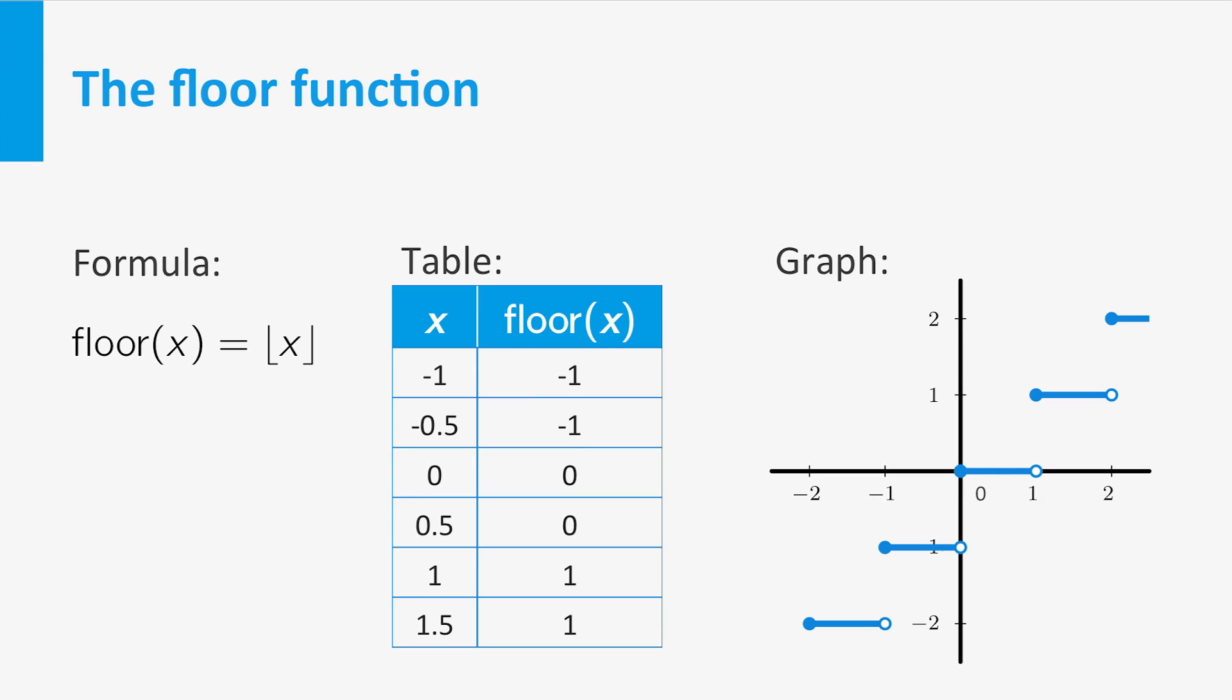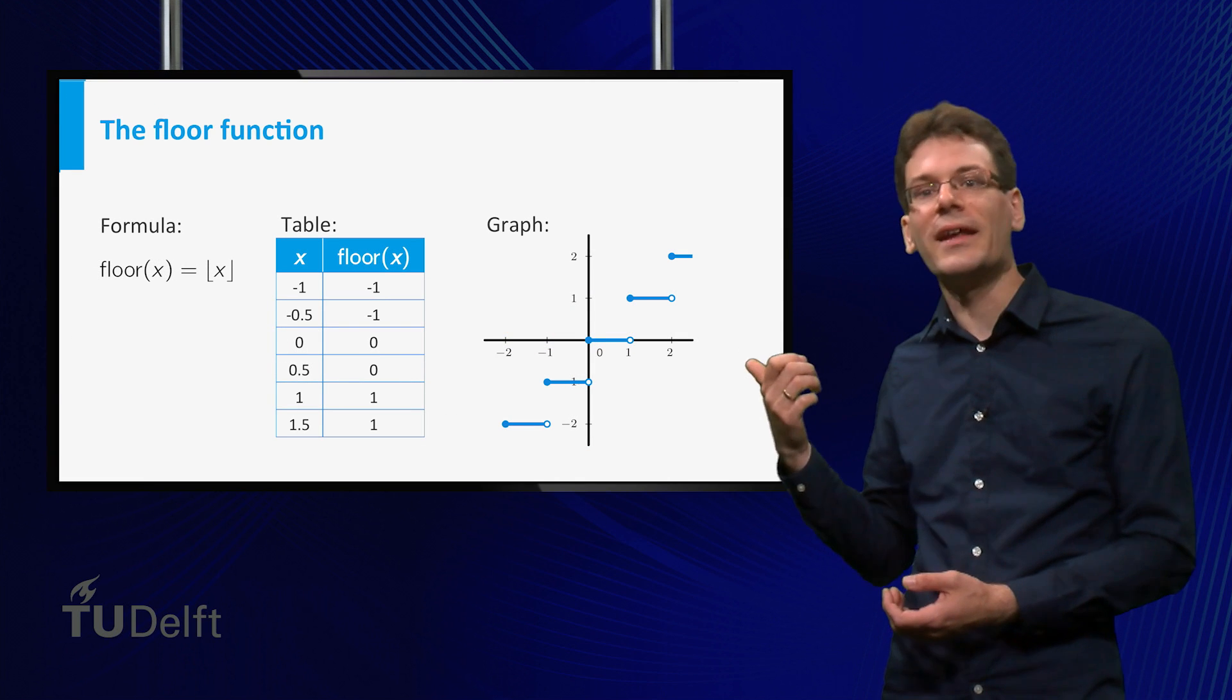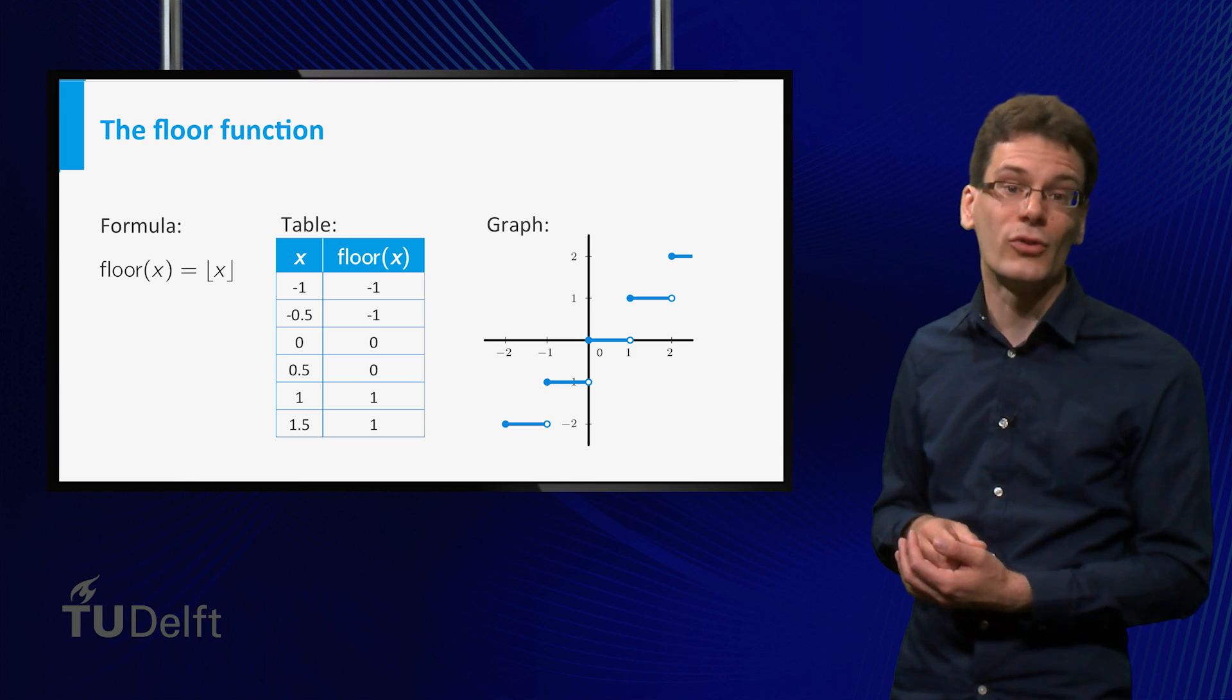This may become much clearer if I tell you in words what it does. Putting a number x into the floor function gives you the largest integer smaller than or equal to x. I hope that now the graph and the table make sense. The formula that I wrote is simply a special notation for this function.